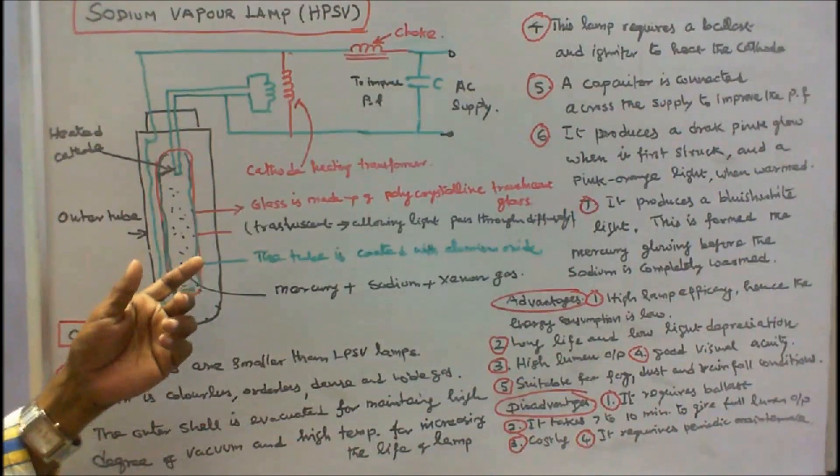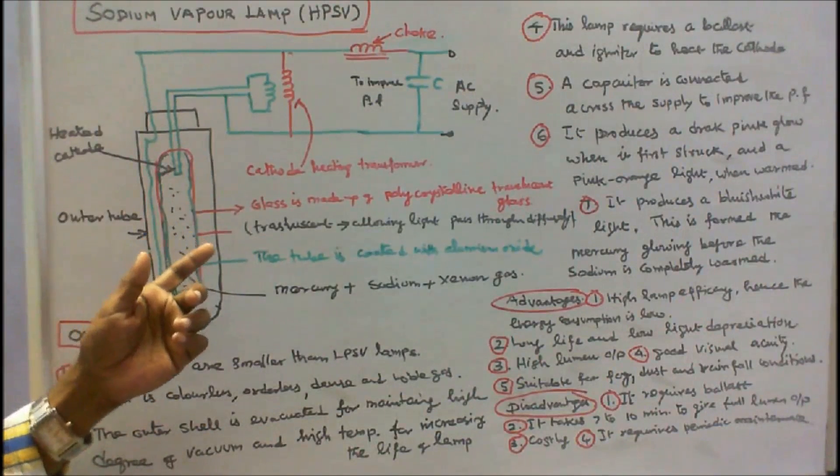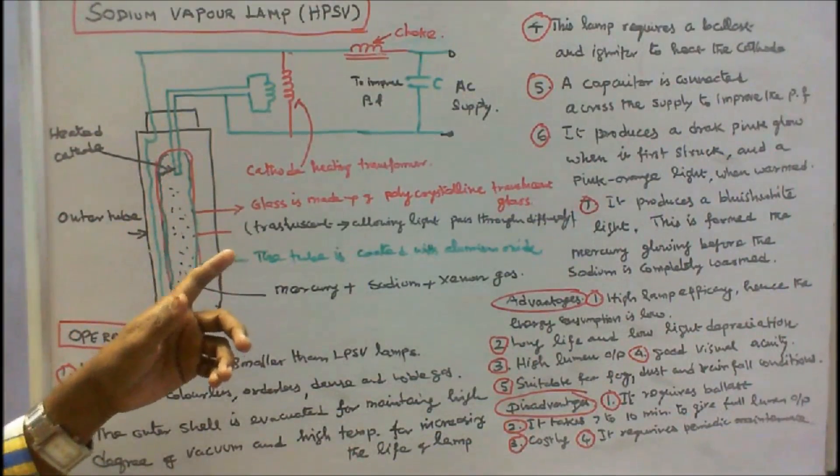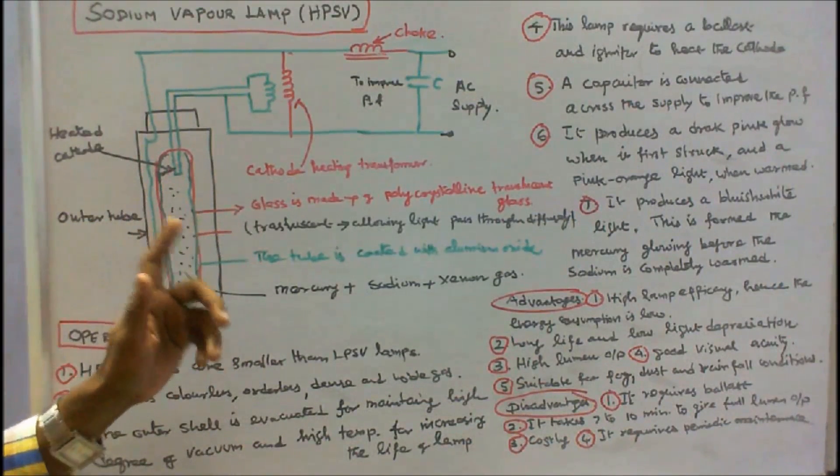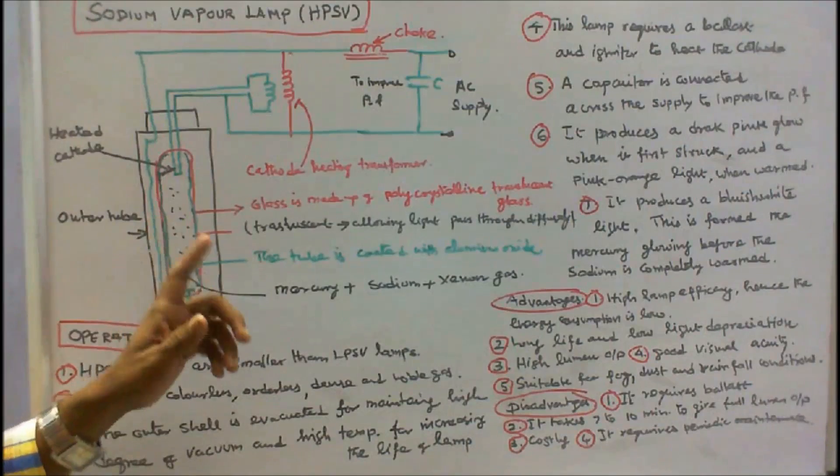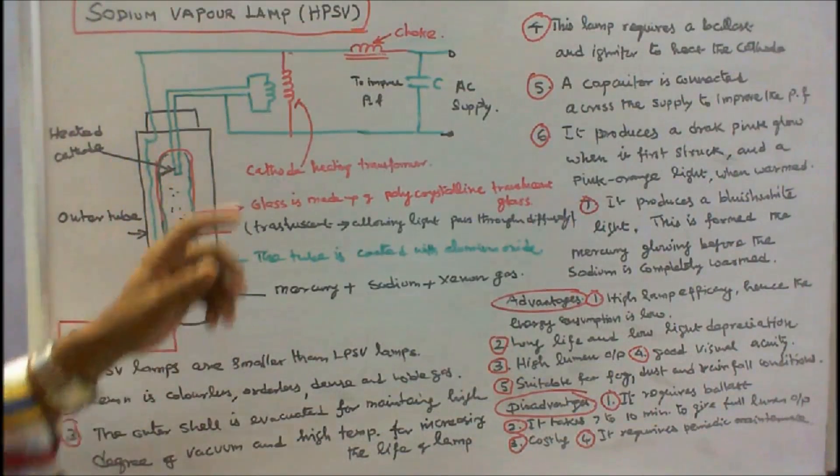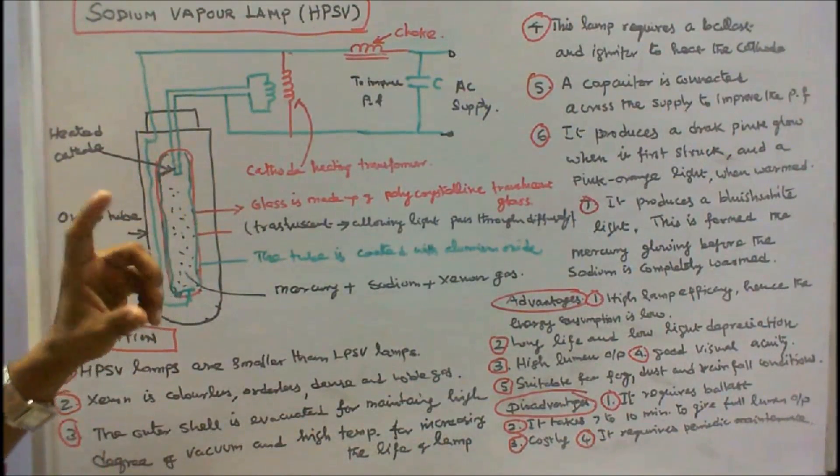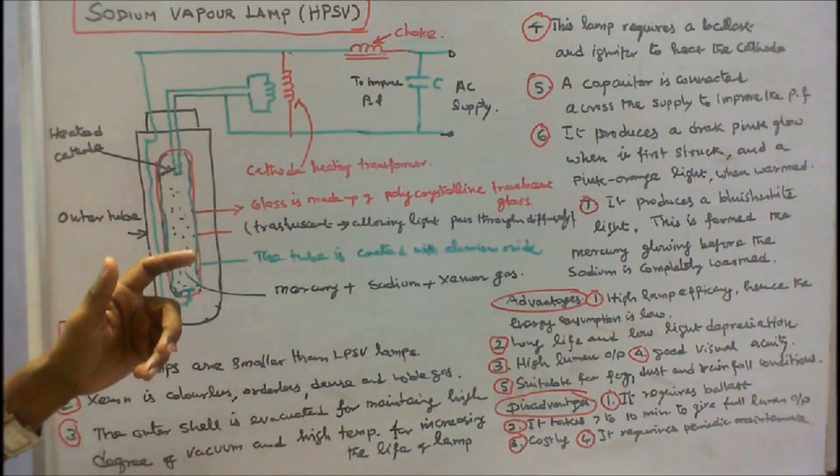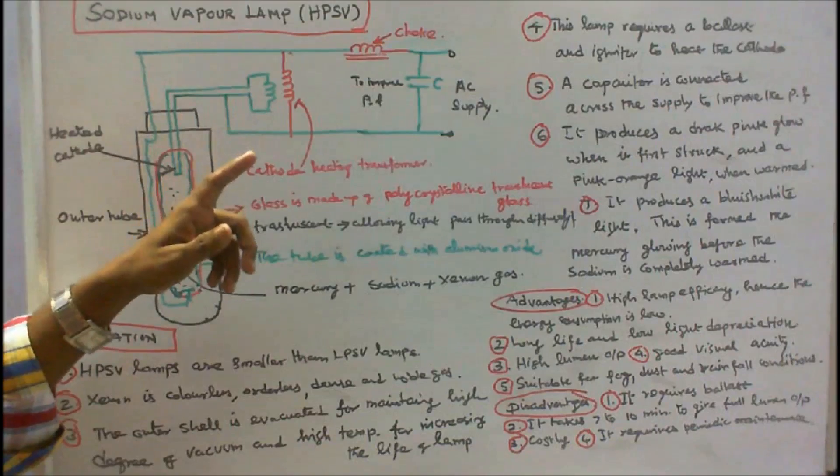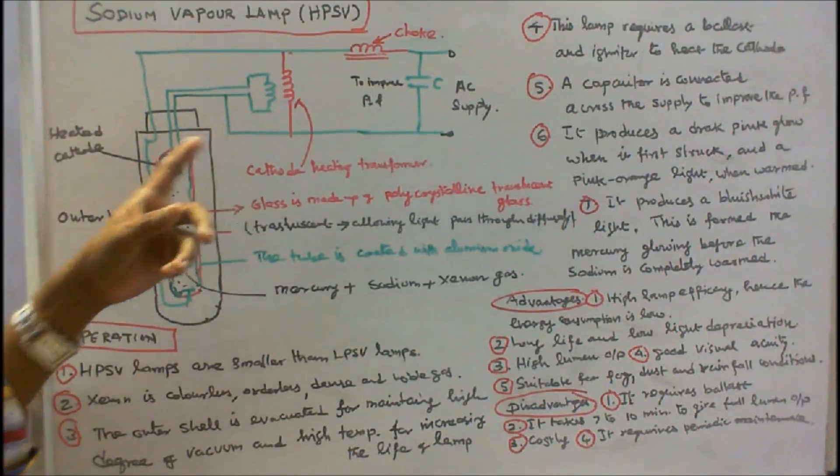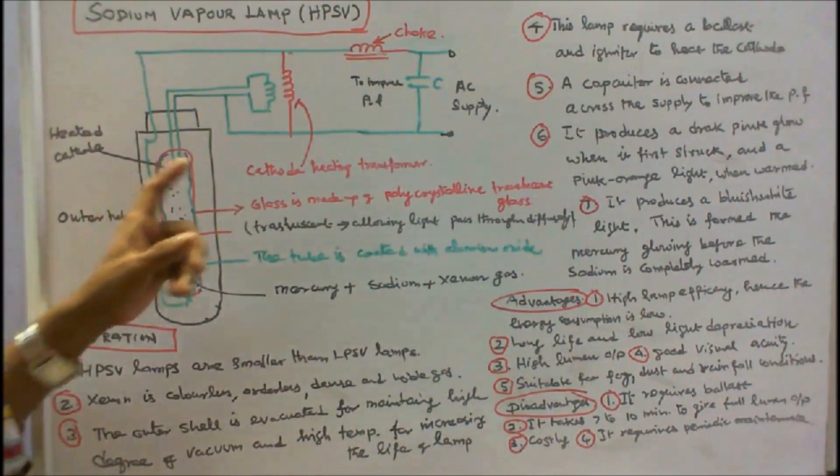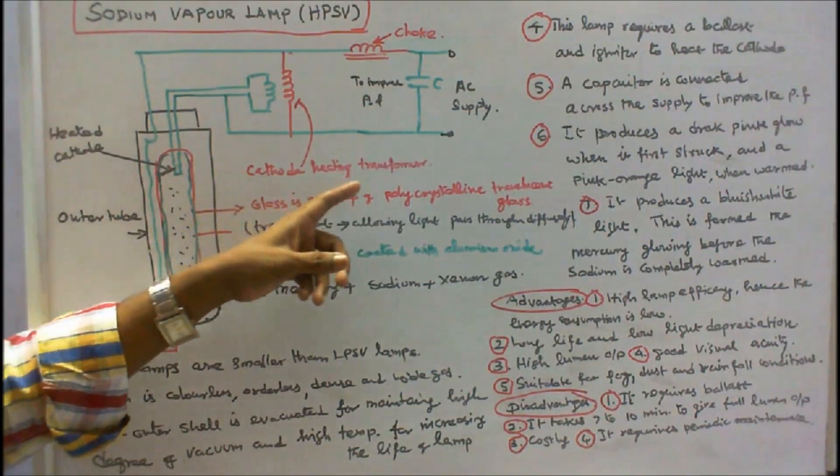This is a figure of a high pressure sodium vapor lamp. Sodium vapor lamps are suitable only for AC supply, hence we need a ballast. Here a choke is connected. It requires high voltage at the time of starting. Hence we go for a high reactance transformer or an auto transformer to heat the cathode. Hence it is called as cathode heating transformer.